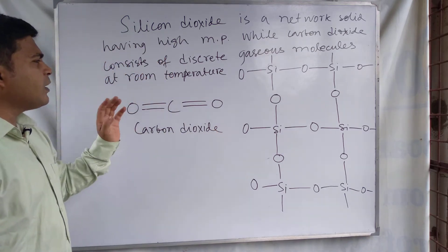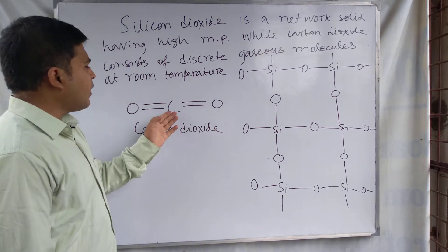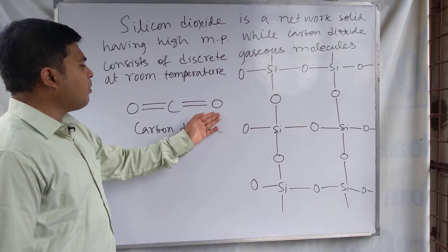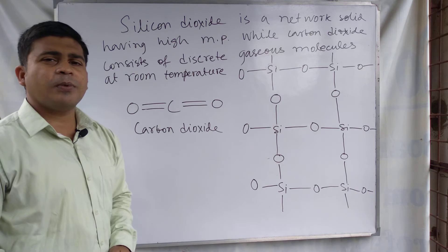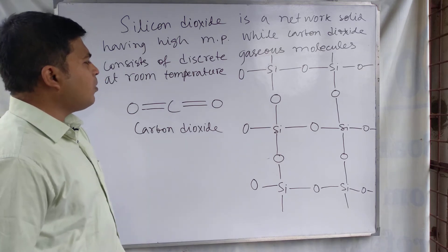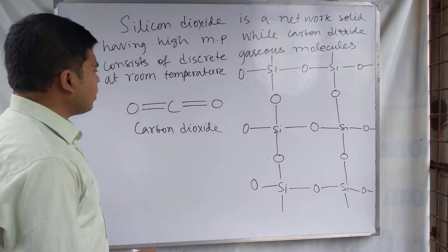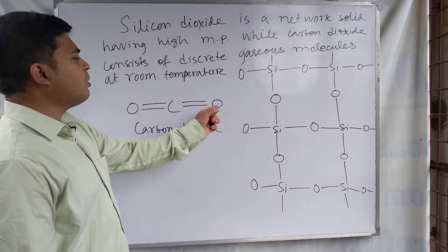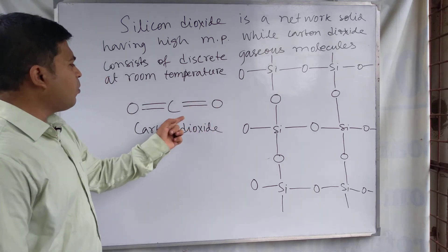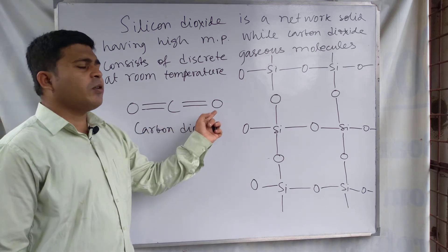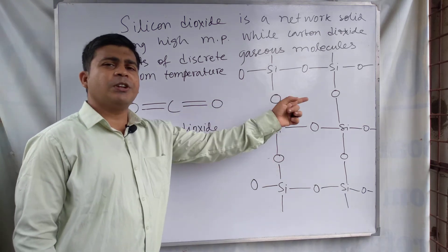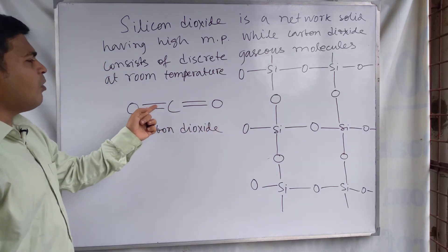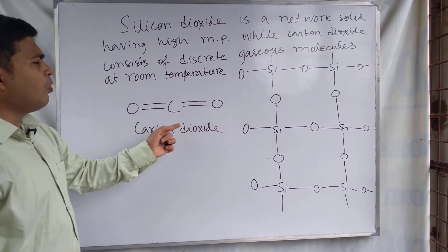Compared to carbon dioxide — in the case of CO₂, carbon contains a p orbital, and the p orbital of oxygen and the p orbital of carbon can form a pi bond. Carbon forms a double bond with oxygen, and carbon dioxide does not form a discrete network-type structure.